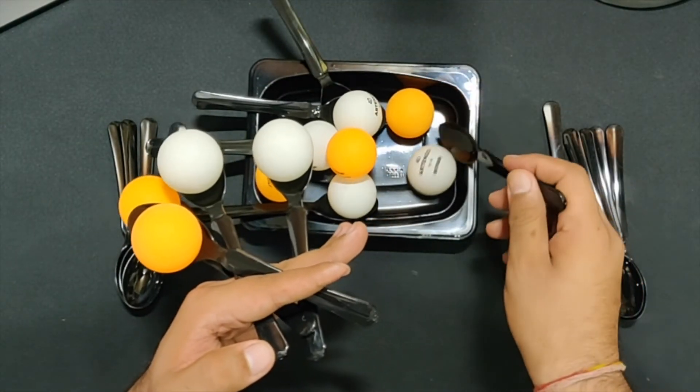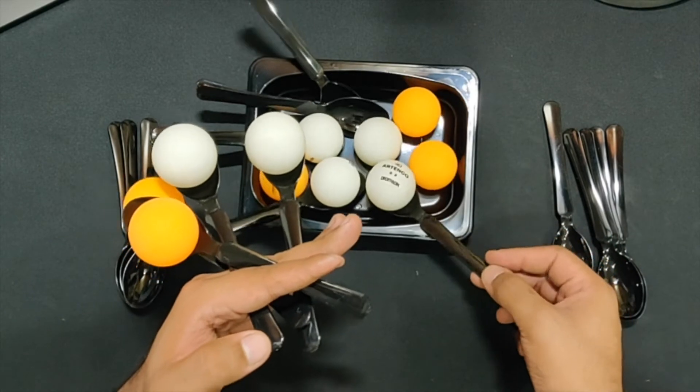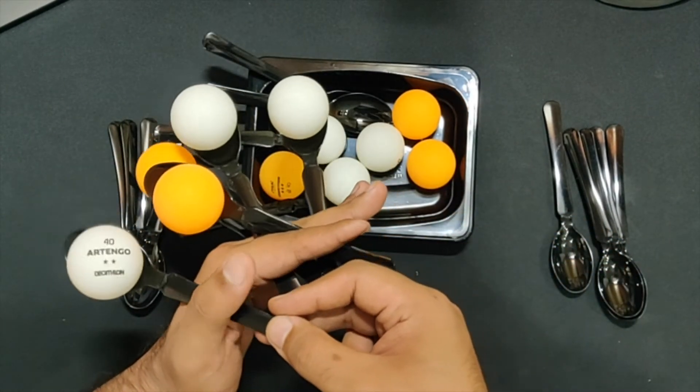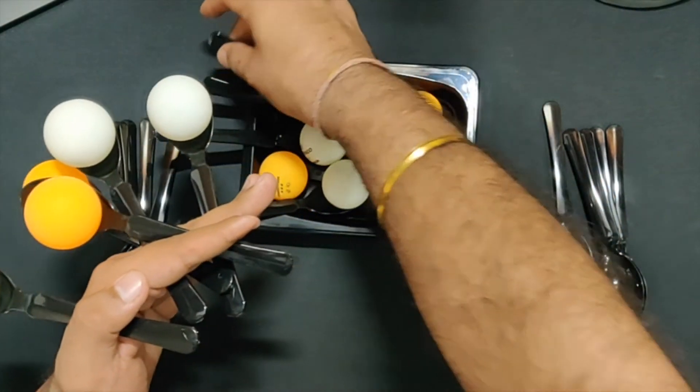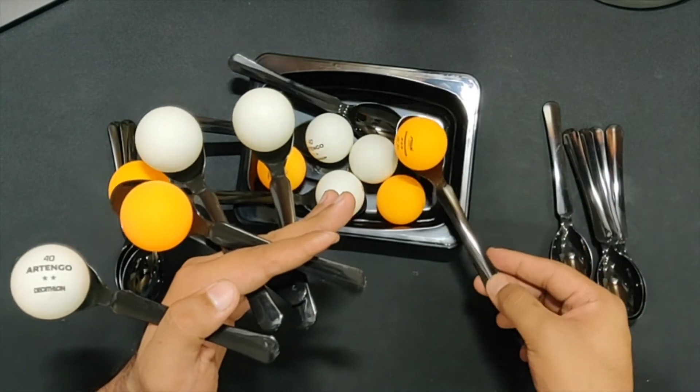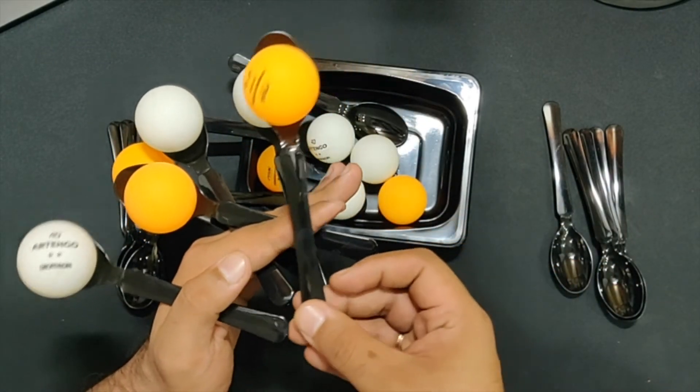I use this spoon again. Thumb is free, I put it on that spot. Where do I keep?